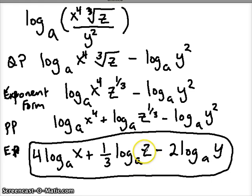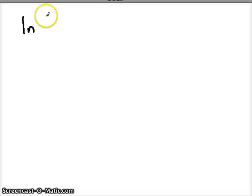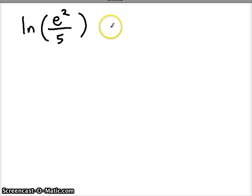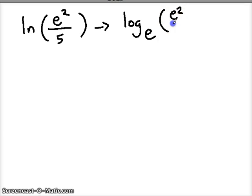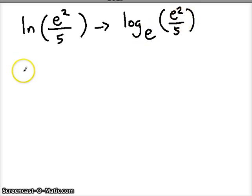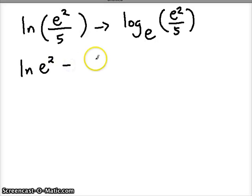Let's do one more, this time using a natural log just to change things up. For example, if I have the natural log of e squared over 5, how can I rewrite that as a sum or difference of logs? First, visualize the natural log using its base — a natural log has base e. So we know we have a quotient with log base e, and we use the quotient property: the natural log of e squared minus the natural log of 5.